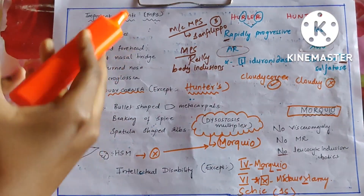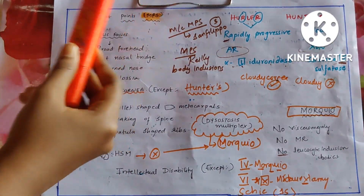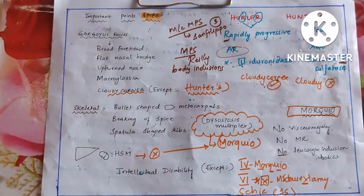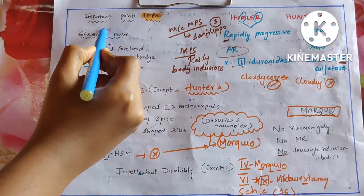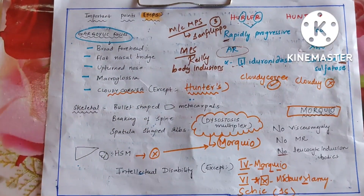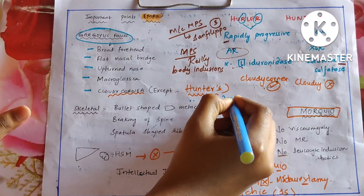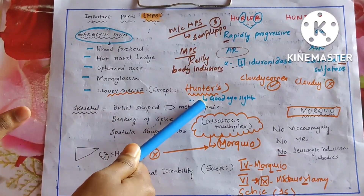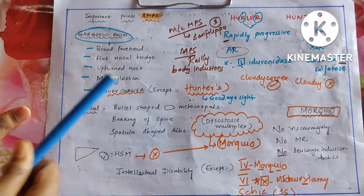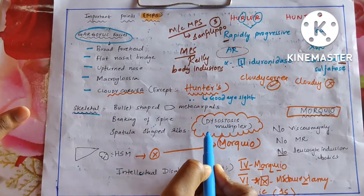Now let us discuss MPS — mucopolysaccharidosis — in detail. All MPS present with gargoylic facies: broad forehead, flat nasal bridge, upturned nose, macroglossia, and cloudy cornea. Cloudy cornea is seen in all MPS except Hunter's disease — in order to hunt something one must have good vision, so Hunter's cornea is clear. Skeletal deformities include bullet-shaped metacarpals, beaking of spine, and spatula-shaped ribs, which together constitute dysostosis multiplex.